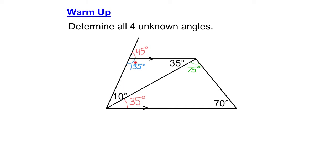I started with this angle. It's inside a triangle, and I know that all the angles inside a triangle add up to 180 degrees. So if I have a 35 degree angle and a 10 degree angle, that's a total of 45 degrees. I need 135 degrees more to get my total of 180 degrees.